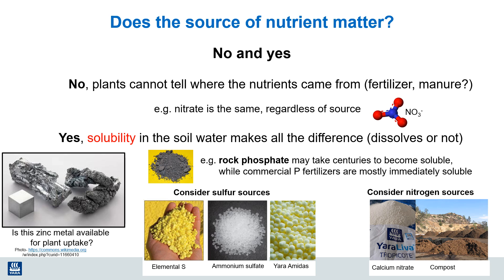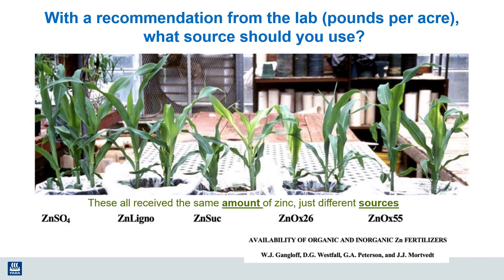These examples illustrate the importance of considering the plant availability of nutrients and not just their chemical content. Just talking about pounds per acre of total applied nutrients doesn't begin to tell the whole story. The importance of nutrient sources shows up in this photograph from work done in Colorado. All these pots received the same quantity of zinc, but the sources were very different. The response of corn to these five different sources of zinc varied considerably, even though they all received the same amount of zinc. The source clearly made a difference.